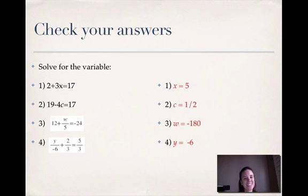Alright, let's check. So for number 1, x should equal 5. Number 2, c should equal 1 half. Number 3, w should equal negative 180. And number 4, y should equal negative 6.